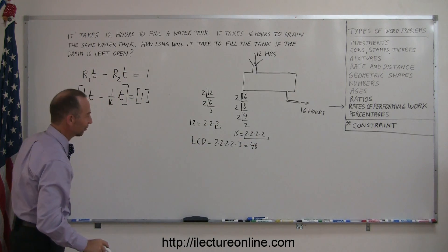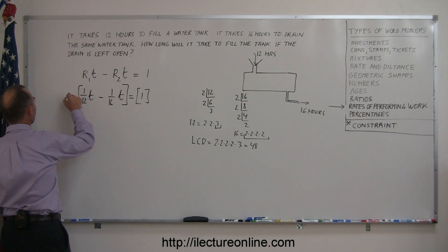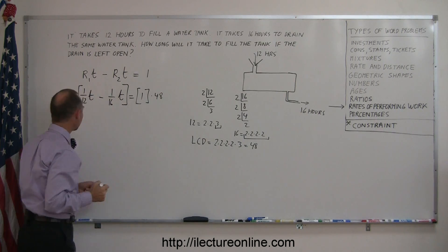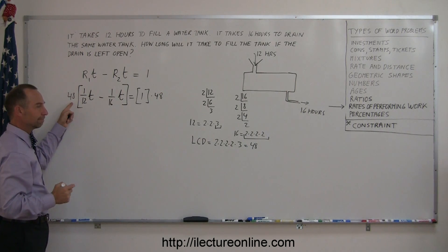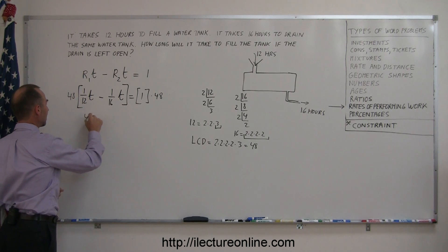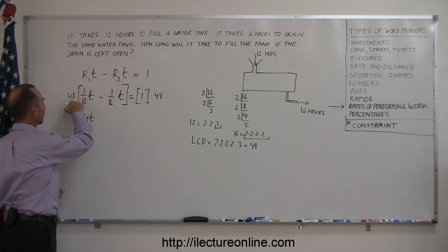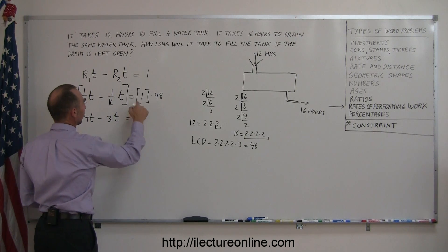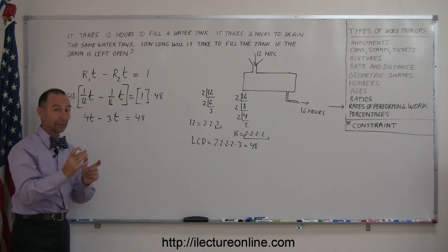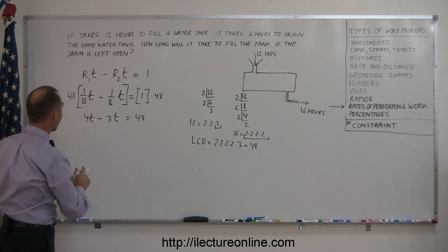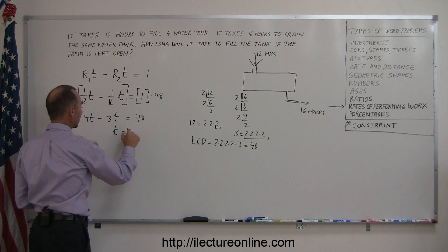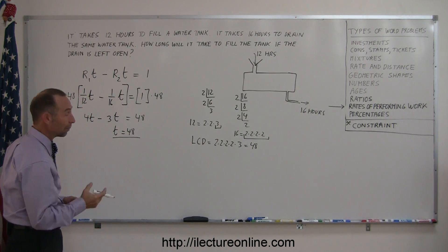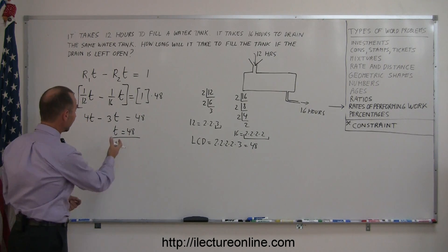Multiplying both sides by 48: 12 goes into 48 exactly 4 times, giving 4t. And 16 goes into 48 exactly 3 times, giving minus 3t, which equals 48. Combining like terms: 4t minus 3t is 1t equals 48. The time it takes to fill the tank while also draining it is 48 hours.